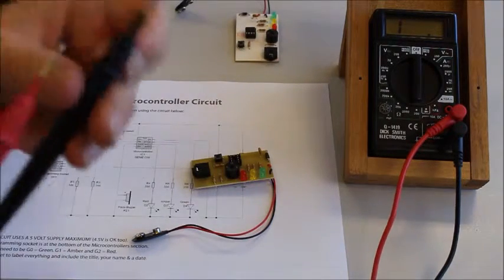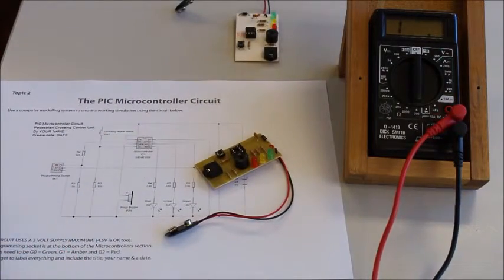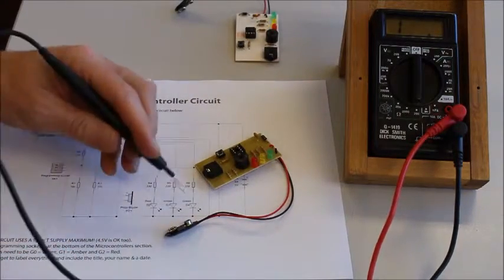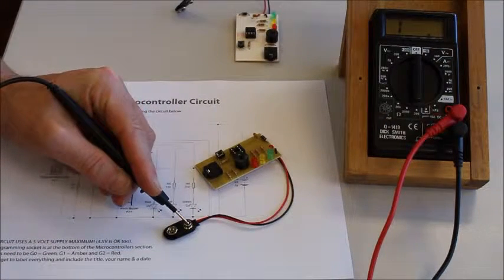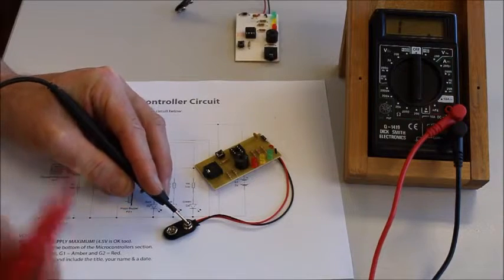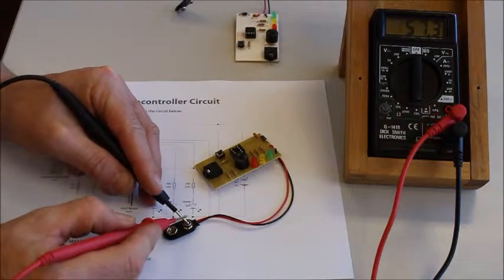Then you want to make sure that you get the black probe and you connect the black probe to the negative on the battery supply. So negative on the battery supply, red positive. First thing you want to do is just touch the probes together.